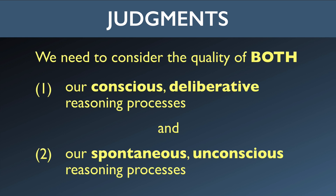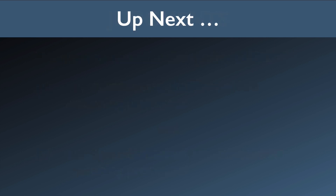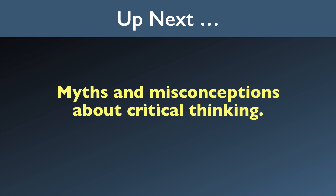So when we talk about the quality of our judgments — our reasoning processes — we need to consider both the quality of our conscious deliberative reasoning processes, like when we're weighing the pros and cons of two competing job offers, and the quality of our spontaneous unconscious reasoning processes that actually dominate most of our decision making. These are open to evaluation too; they can be more or less accurate or more or less effective. Now with what we've said so far we can make a number of claims about what critical thinking is and isn't. I've chosen to frame them in terms of common misconceptions or myths about critical thinking. So in the next two episodes we're going to explore what in my view are the most important myths or misconceptions about critical thinking.